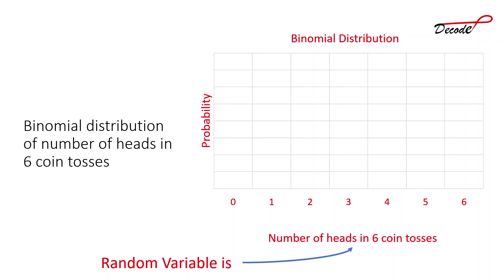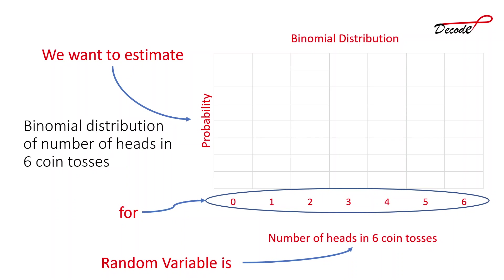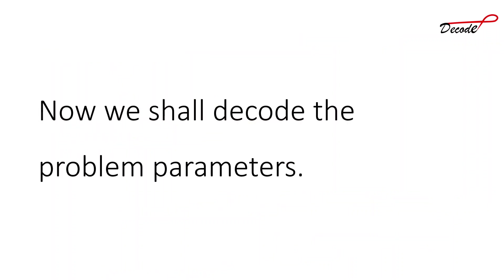The binomial distribution of number of heads in six coin tosses will be the probability distribution with a random variable: number of heads in six coin tosses. We want to estimate the probability of getting zero heads, one head, two heads, and up to six heads in six coin tosses. We will decode the problem parameters — in the previous video we discussed what the problem parameters are — and find the values required for estimating binomial probability.